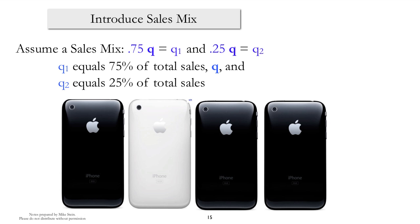So we've introduced a new variable into the equation, and that is Q without any subscripts, and that represents the total number of units sold.